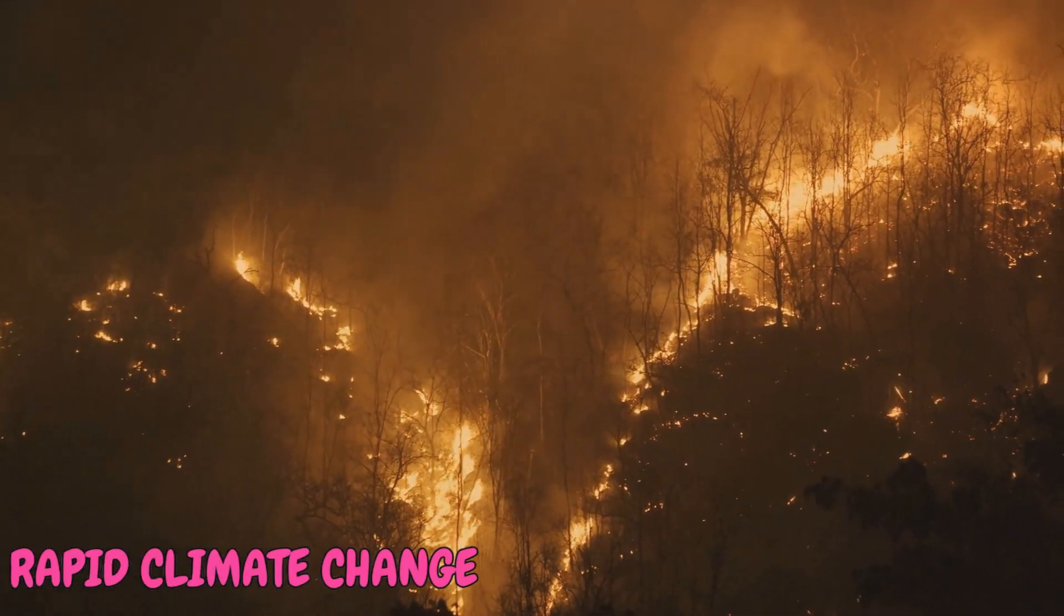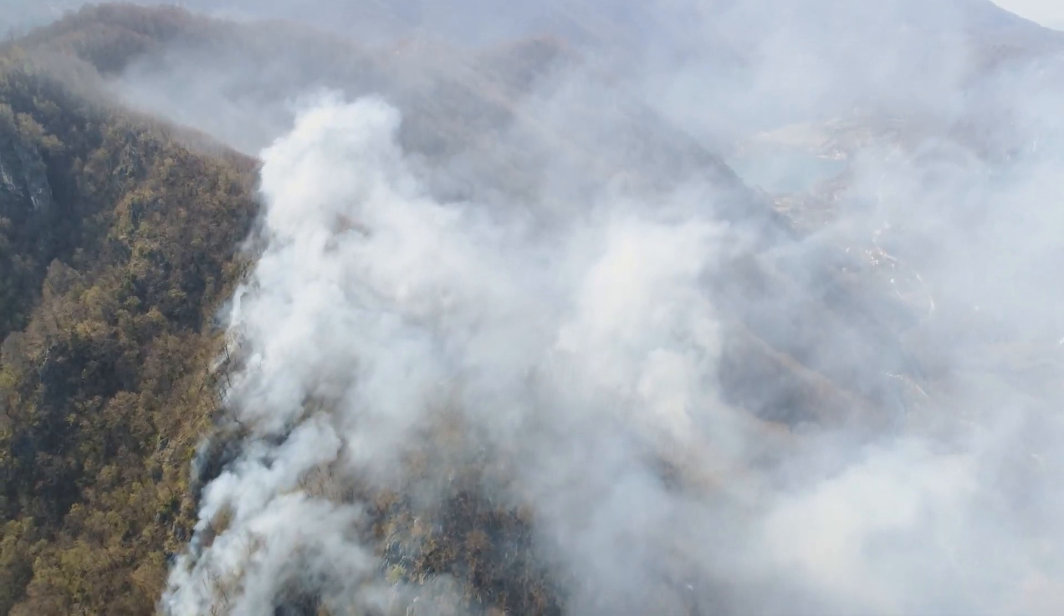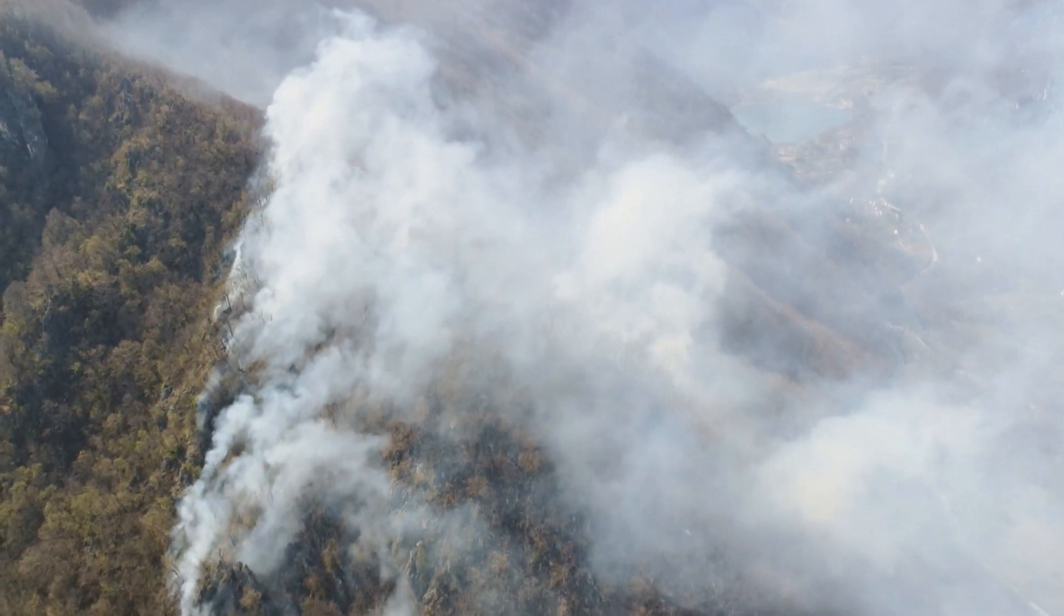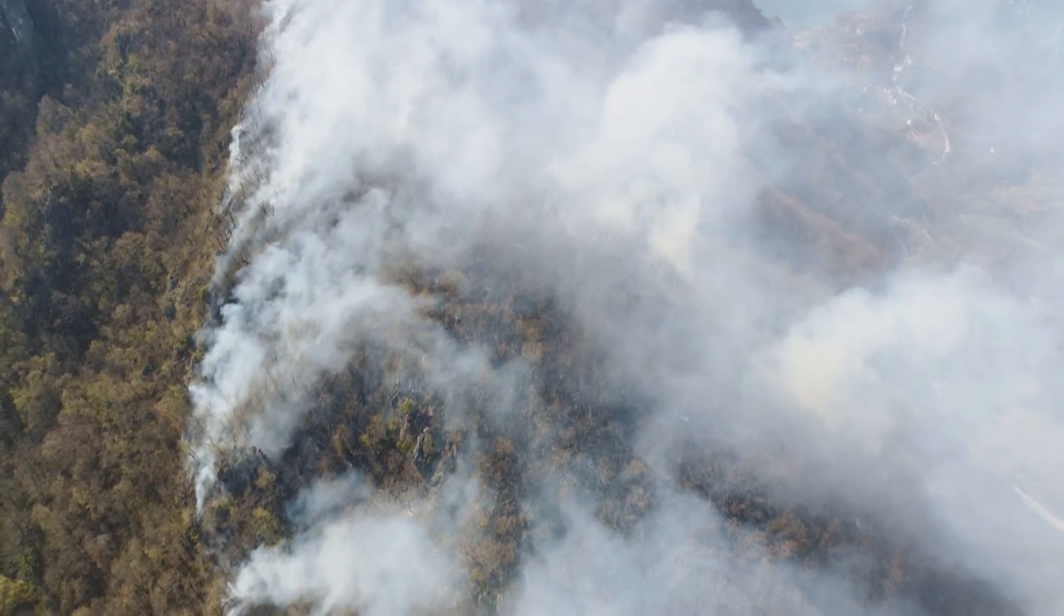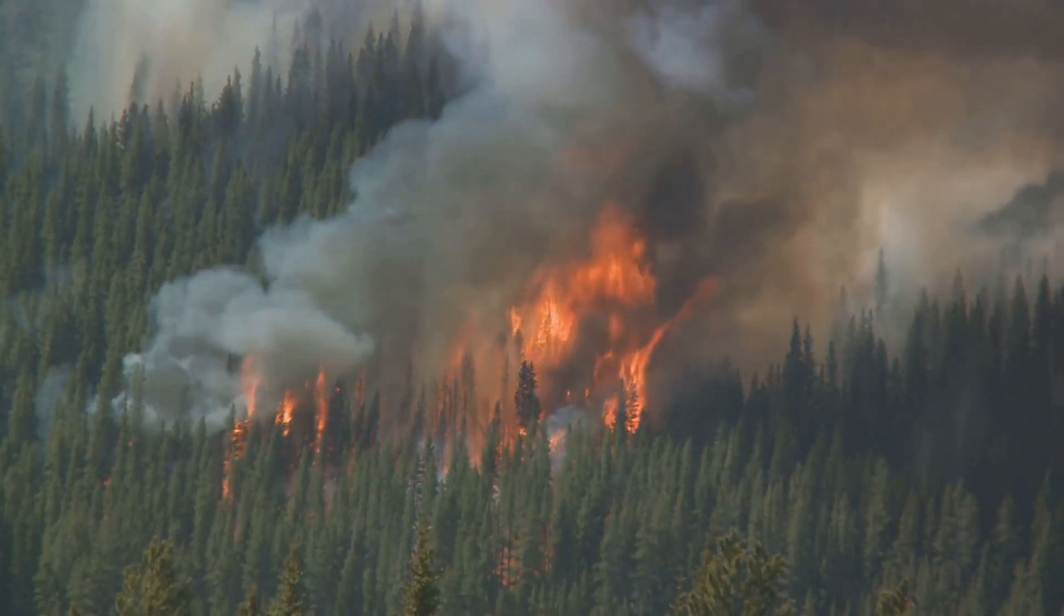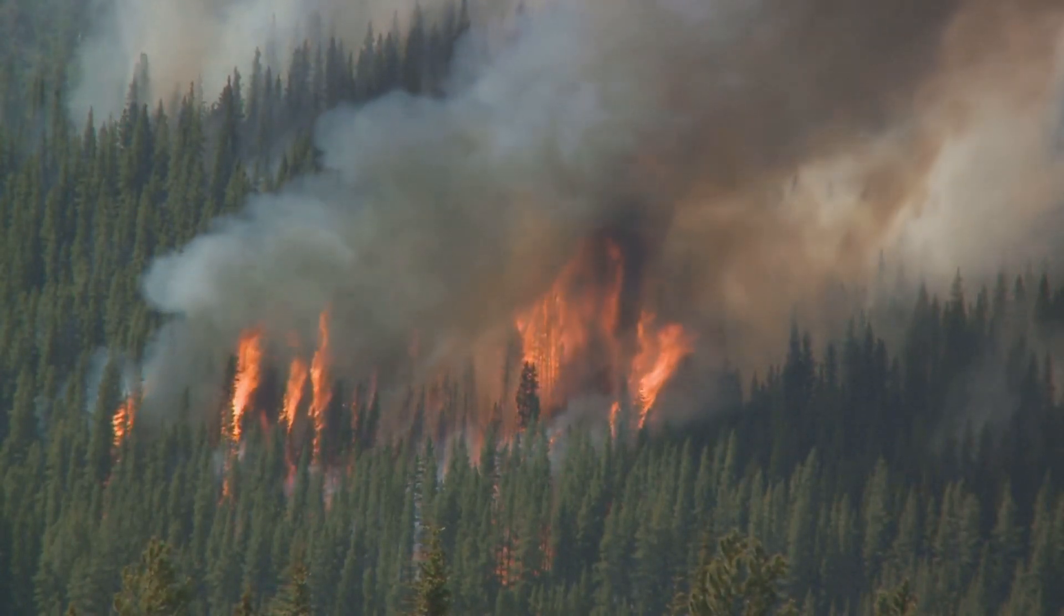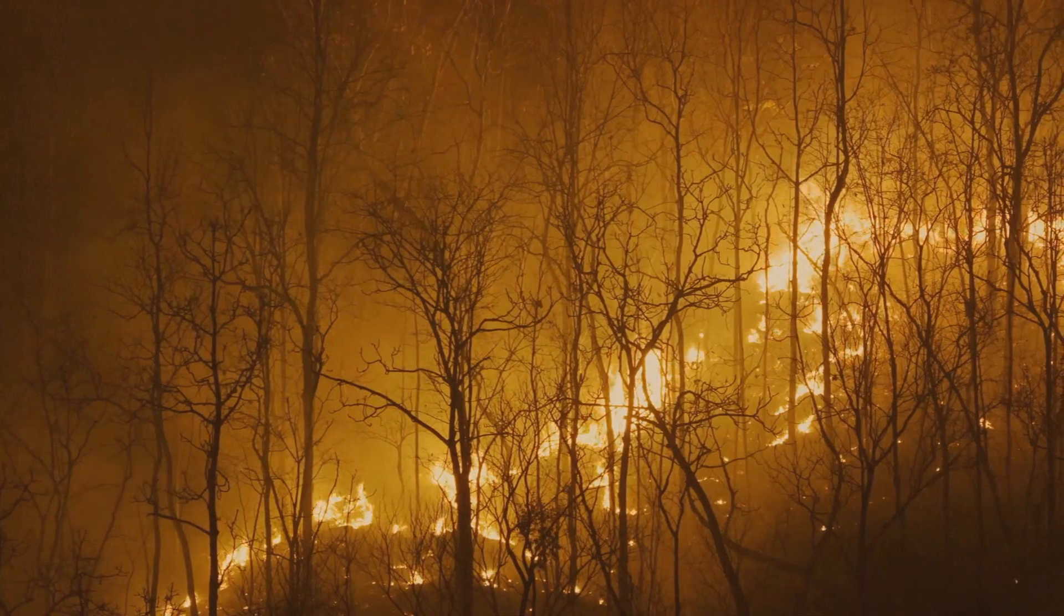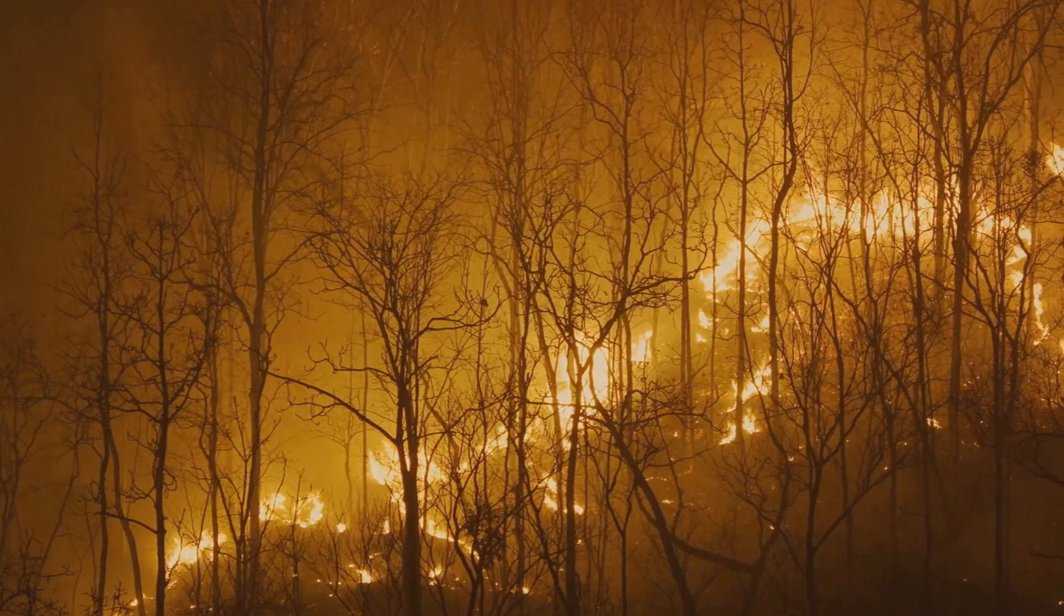Let's start with rapid climate change. Imagine a world where the polar ice caps have melted, causing sea levels to rise and coastal cities to disappear. Extreme weather events occur more frequently, resulting in devastating wildfires, hurricanes, and droughts. This is not a dystopian future from a science fiction novel.